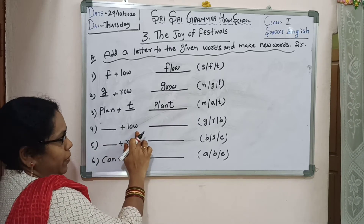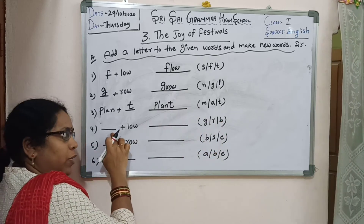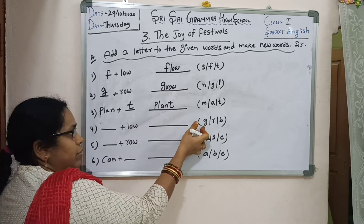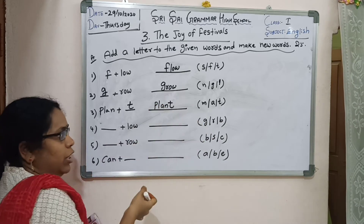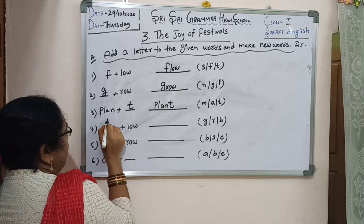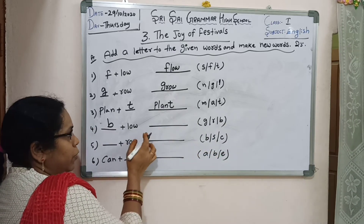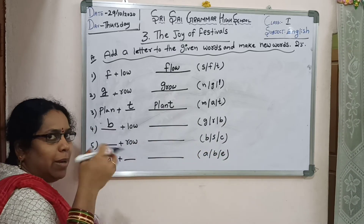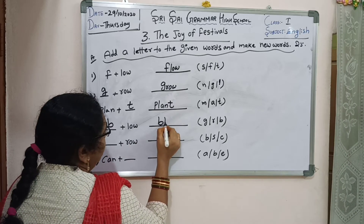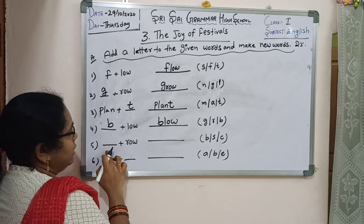Next: L-O-W. We add B — B-L-O-W. Blow means to blow air. B-L-O-W, blow. Then: R-O-W. We add C — C-R-O-W.